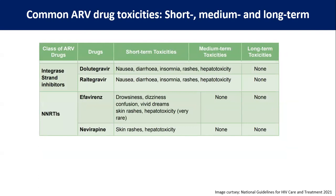For integrase strand transfer inhibitors — dolutegravir — in the short and medium term: nausea, diarrhea, insomnia, rash, and hepatotoxicity. For NNRTIs — efavirenz and nevirapine — only in the short term: drowsiness, dizziness, confusion, vivid dreams, skin rashes, and hepatotoxicity. The intensity or severity of skin rash and hepatotoxicity is more common with nevirapine than with efavirenz.